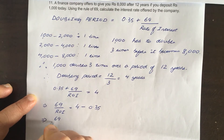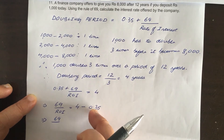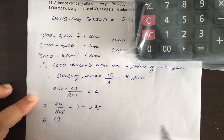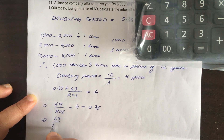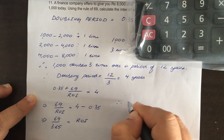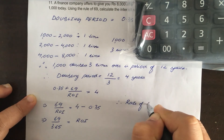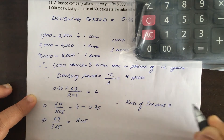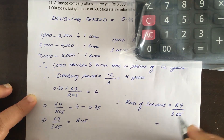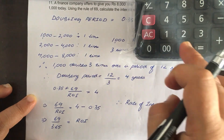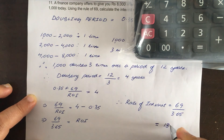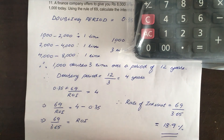4 minus 0.35 equals 3.65. Bringing ROI to the other side, the rate of interest equals 69 divided by 3.65, which equals 18.9 percent. So that is your answer.